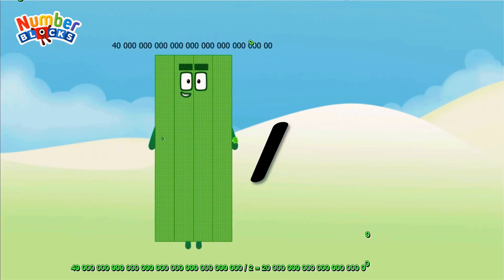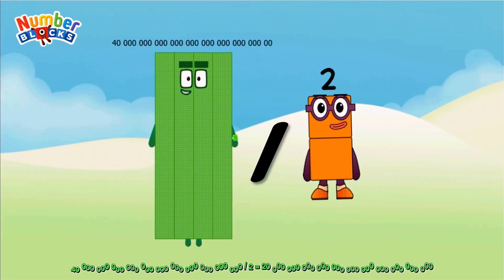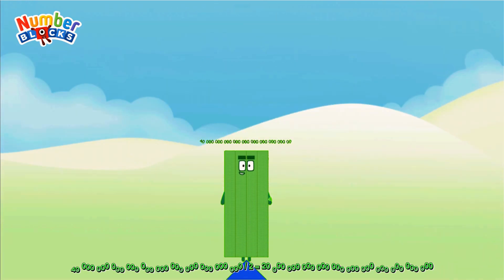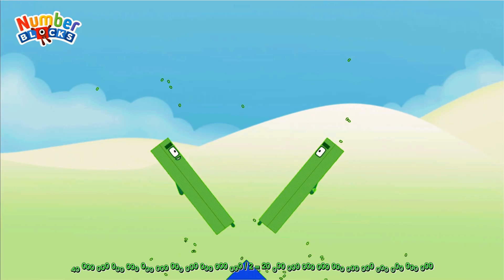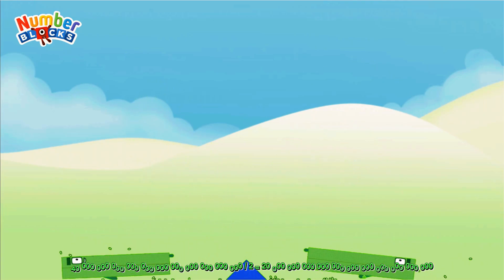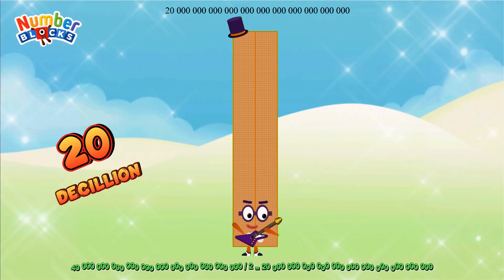40 decillion divided by 2 equals 20 decillion.